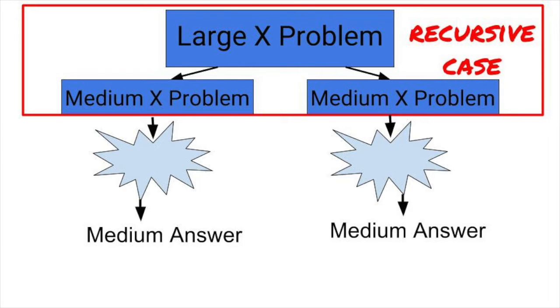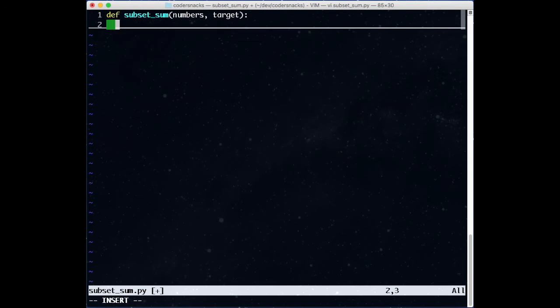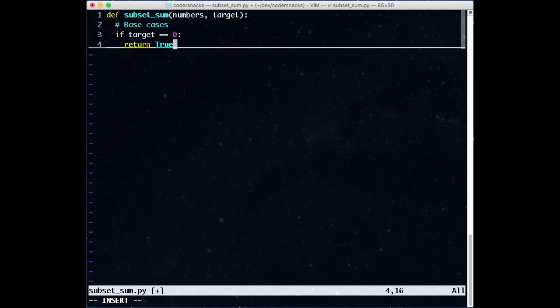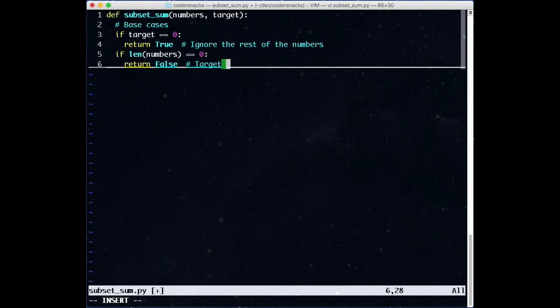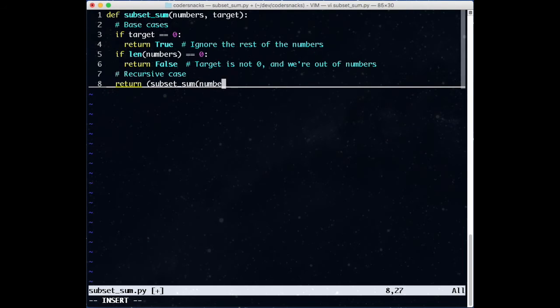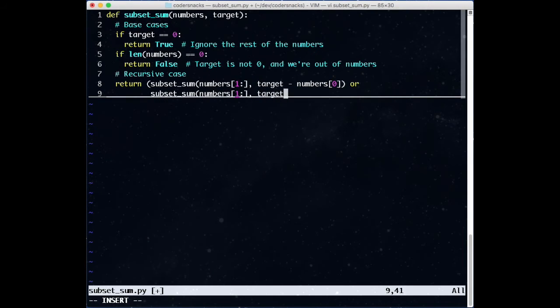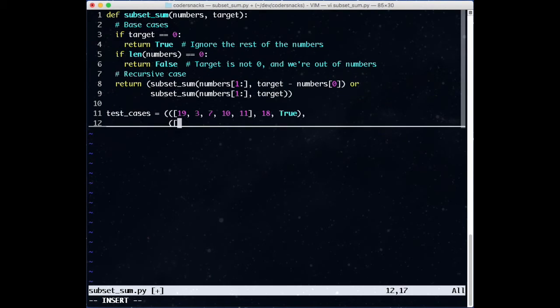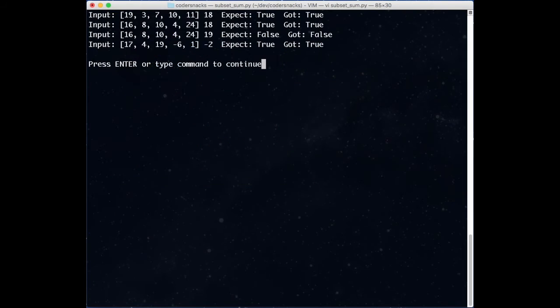Let's write the code to do this. First, the base cases. If the target is 0, we're done, and return true. If there aren't any numbers in the list, we return false, because if the target were 0, we would have already returned true. Then, for the recursive case, if either case, using the number or not, is true, we return true. Short and sweet. We add some test cases, and we see that we get the result we expect.